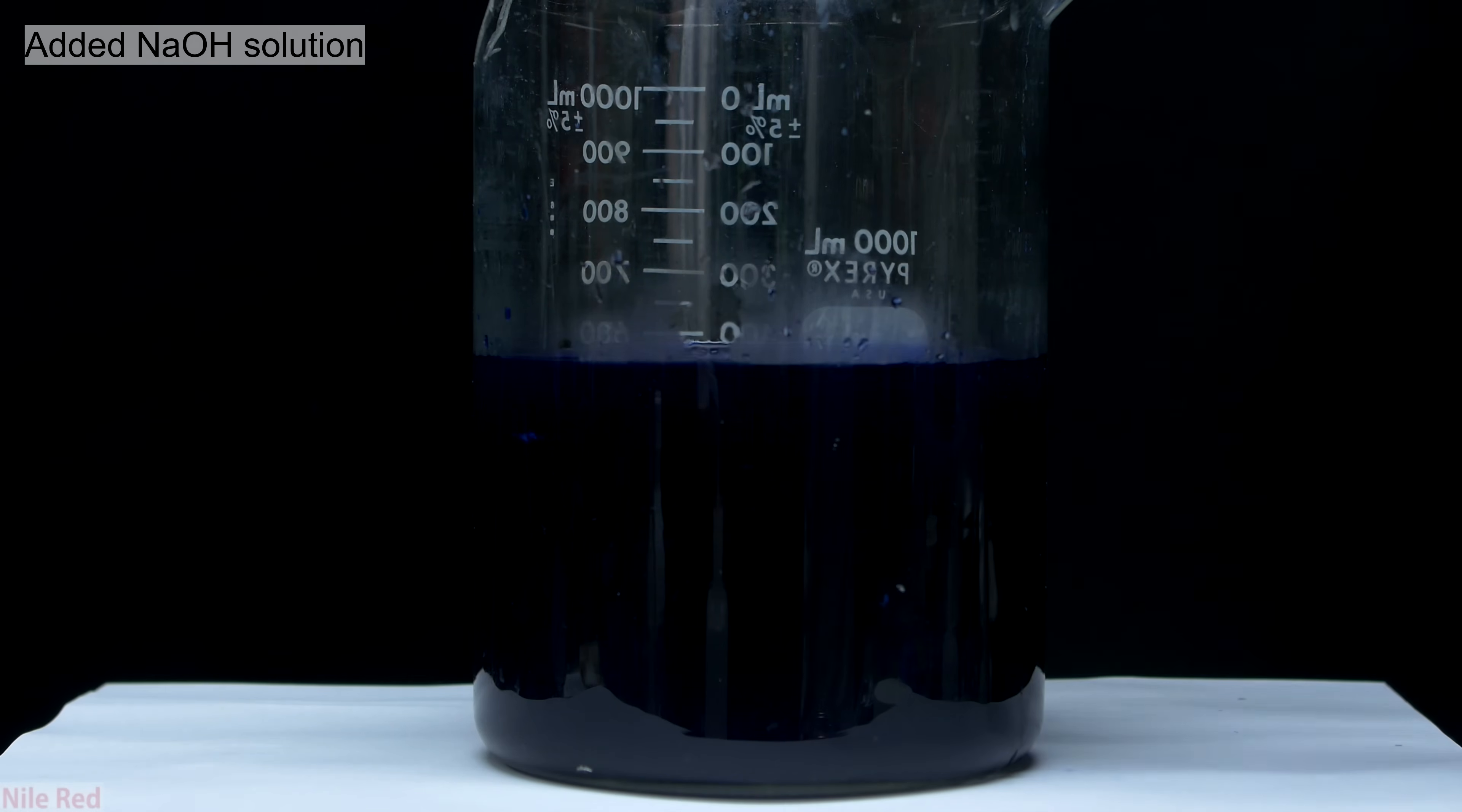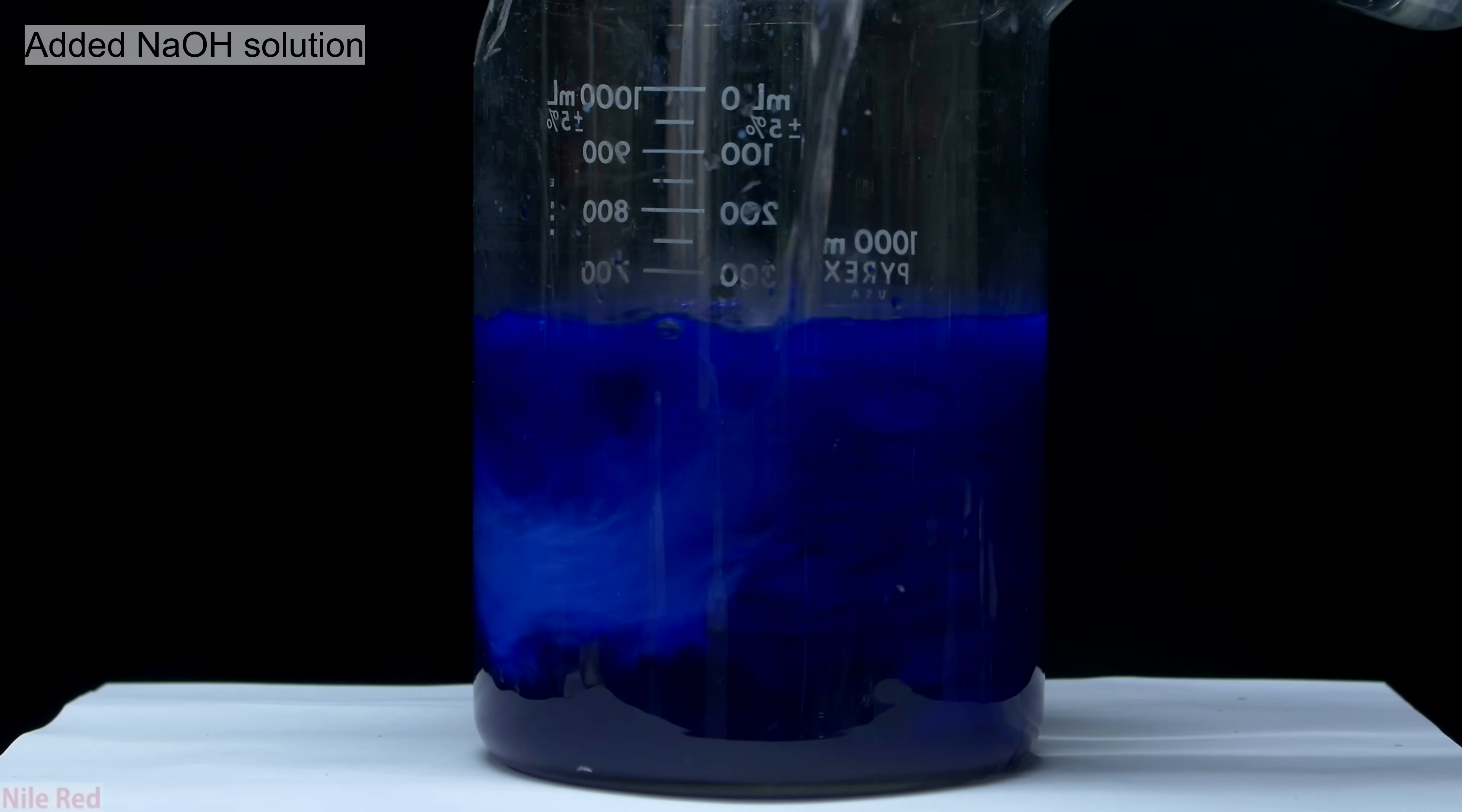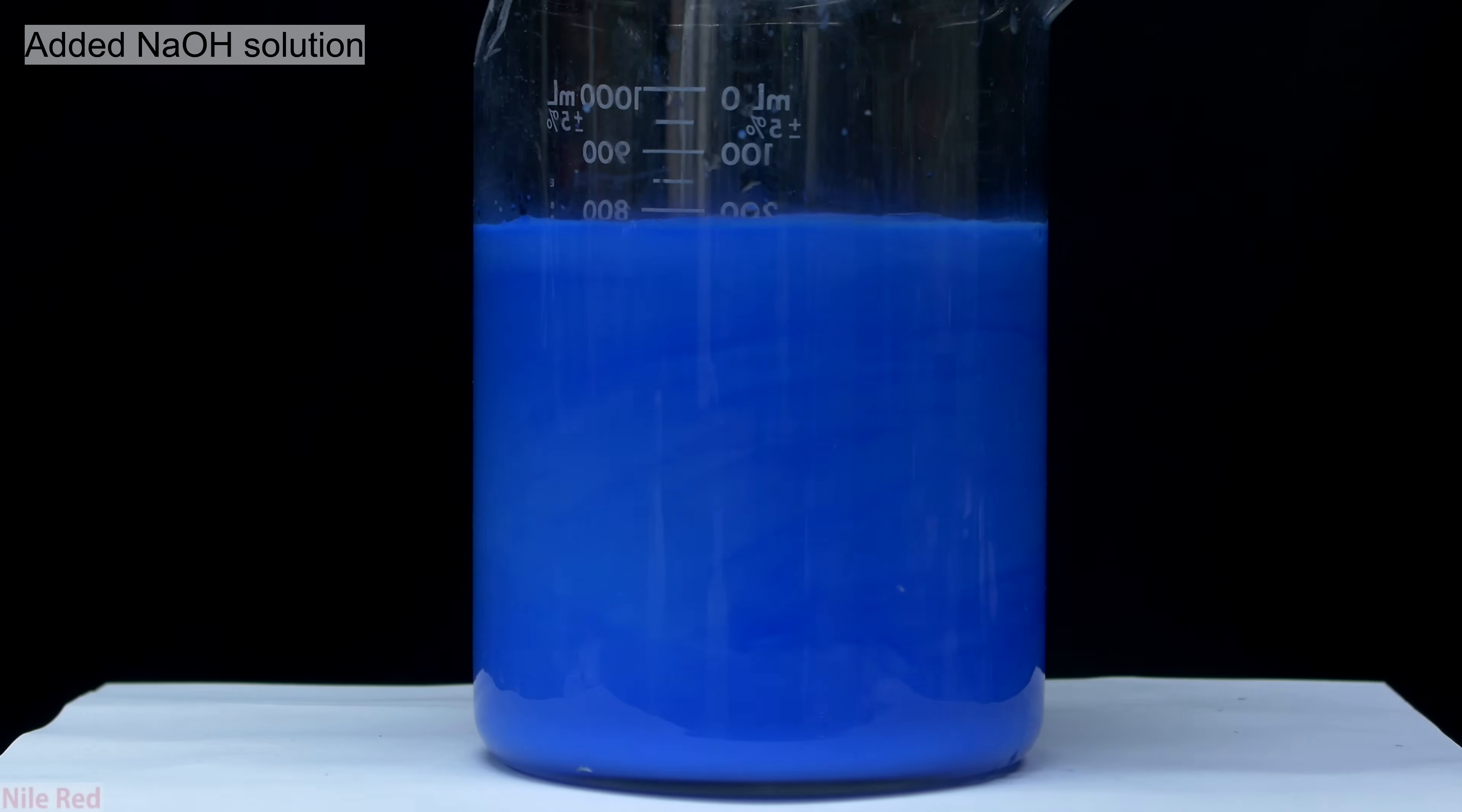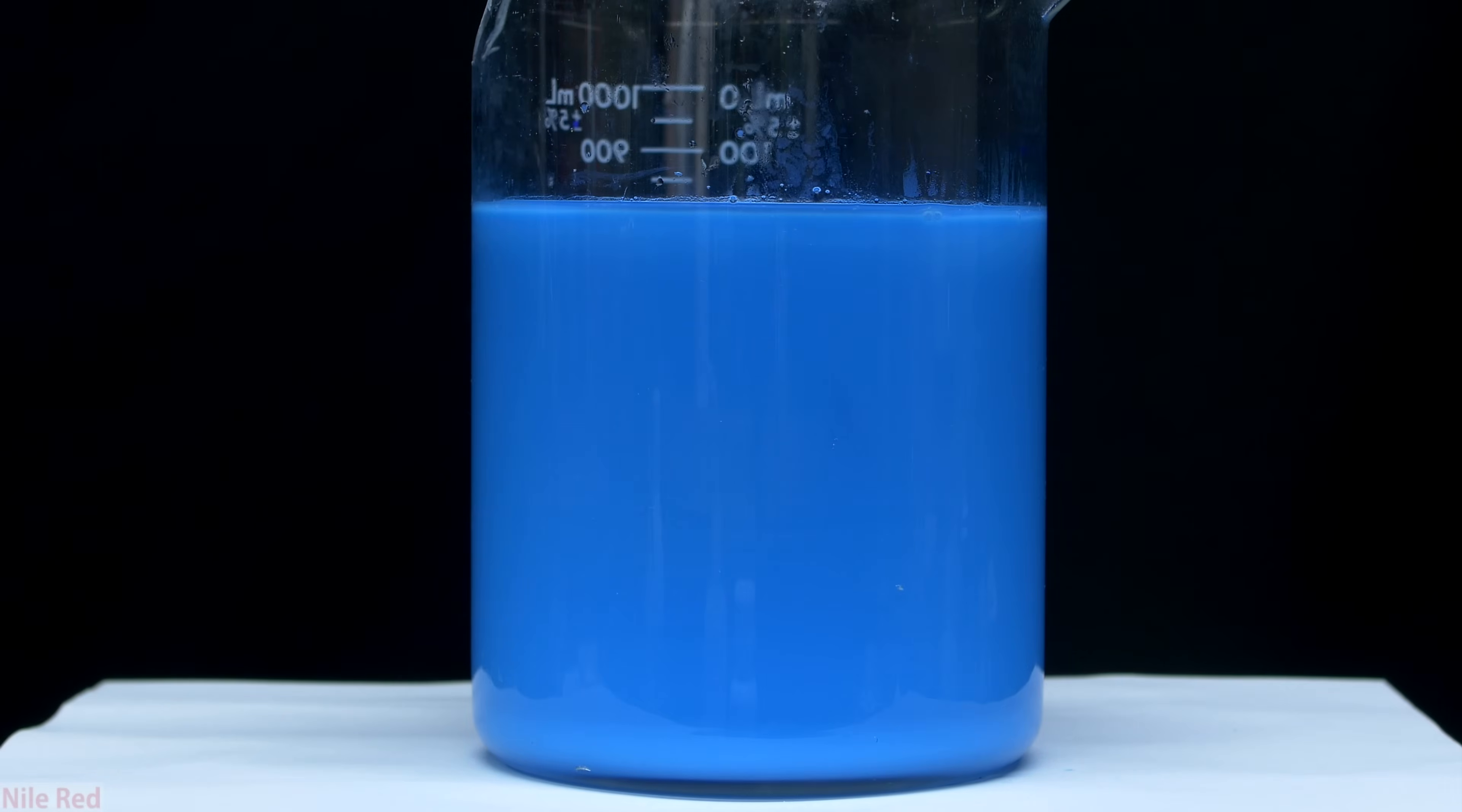The sodium hydroxide is then dumped all at once into our dark blue ammonia copper hydroxide solution. Immediately when the sodium hydroxide solution is added, copper hydroxide starts to precipitate out. After all of the sodium hydroxide is added, we're left with a lot of very nice light blue copper hydroxide. The sodium hydroxide breaks apart the complex that formed between ammonia and copper hydroxide, and it serves to fully precipitate all of our copper hydroxide from solution.